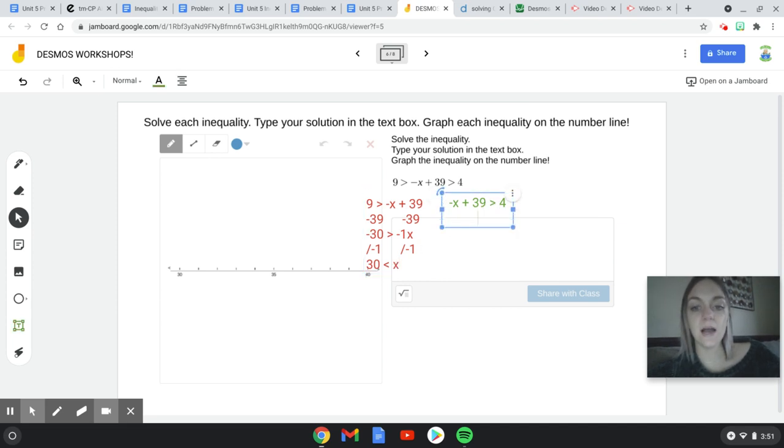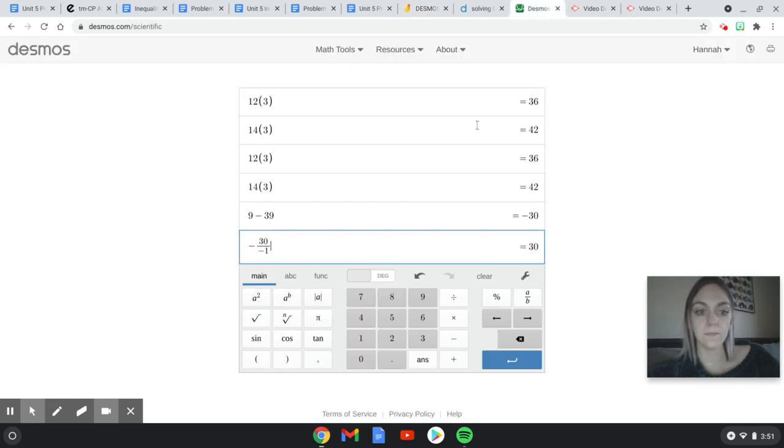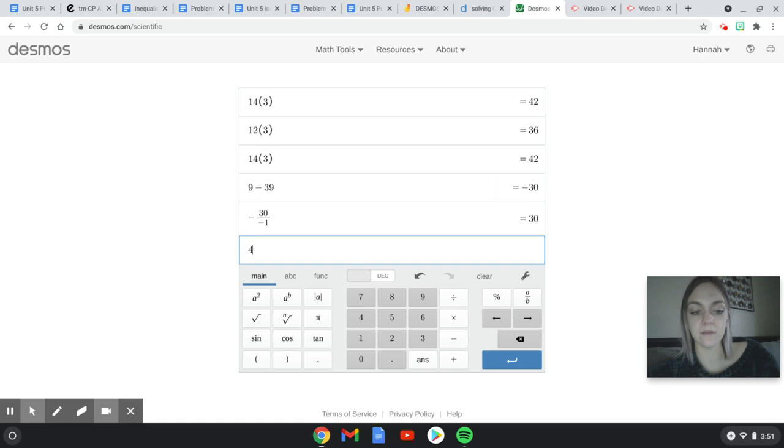I'm going to do the same on this side. Got to get rid of this 39. It's positive. Got to subtract. So minus 39 on both sides. Now I'm going to need Desmos again to do 4 minus 39. Make sure you're watching your negative signs. 4 minus 39. I get my answer as negative 35.